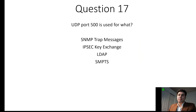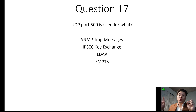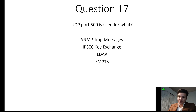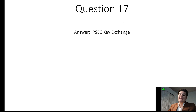Question 17. UDP port 500 is used for what? SNMP trap messages use port 162 for notifications alerting the system of event failures, security breaches, or significant events to the NMS. IPsec key exchange uses port 500 for the Internet Key Exchange protocol. LDAP uses port 389 for Lightweight Directory Access Protocol. SMTPS uses port 465, previously designated for Simple Mail Transfer Protocol Secure, but that service is now deprecated. The answer is IPsec key exchange.